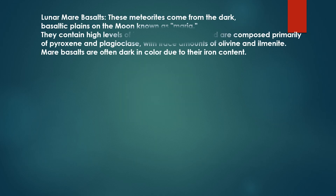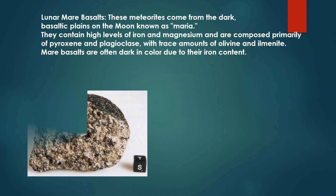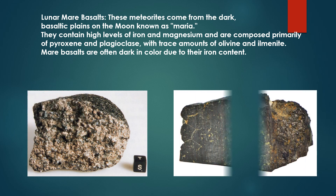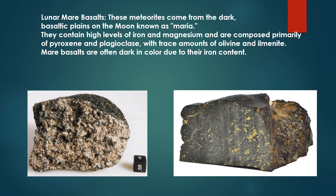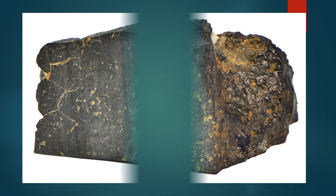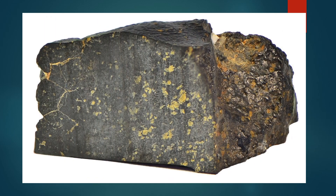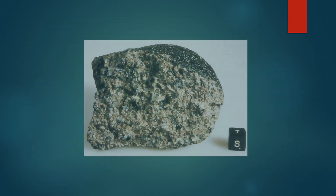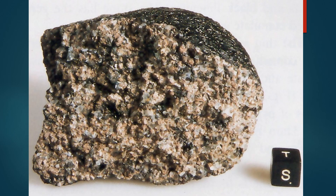Lunar mare basalts: these meteorites come from the dark basaltic planes on the Moon, known as Maria. They contain high levels of iron and magnesium and are composed primarily of pyroxene and plagioclase, with trace amounts of olivine and ilmenite. Mare basalts are often dark in color due to their iron content.